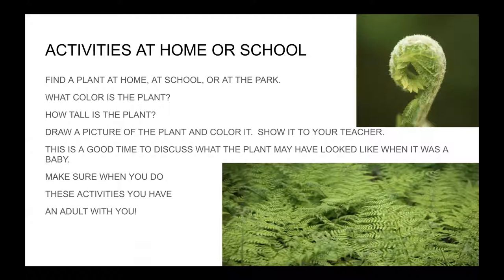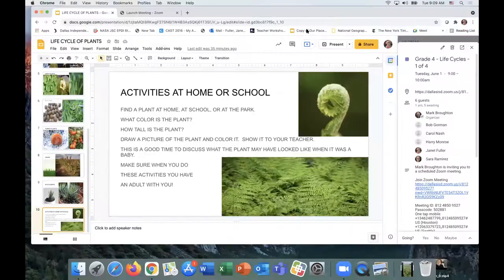Let's talk about activities at home or at school. Find a plant at home, school, or at the park. What color is it? I bet it's going to be green, because green plants make glucose and give us oxygen as a waste gas, which we all need to breathe. How tall is the plant? Draw a picture of the plant, color it, and show it to your teacher. Discuss in your class what the plant may have looked like when it was a baby. Make sure when you do all of these activities that you have an adult with you.